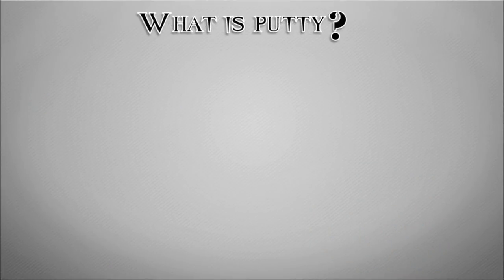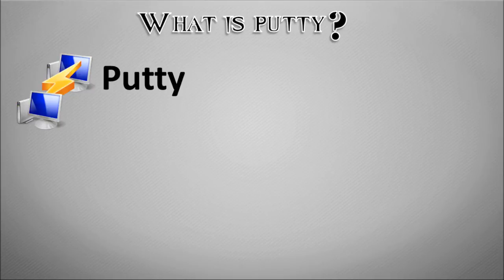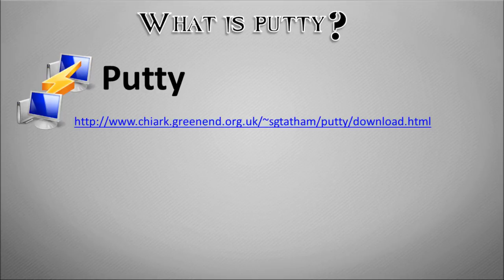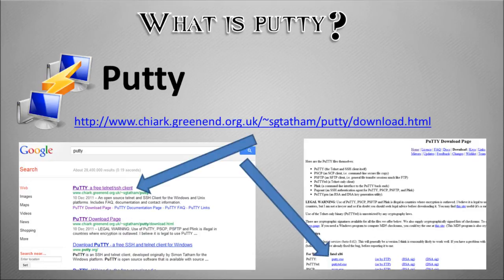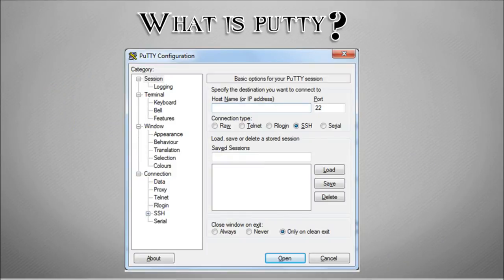What is PuTTY? PuTTY is essentially software that runs on Windows and it allows you to open up that SSH connection. It can be downloaded from the link in the description, or you can just Google for PuTTY and the first hit will be the PuTTY site. Go to the Downloads section and you'll see the link for PuTTY.exe. Download that and run it — it doesn't need to be installed, just double-click it and it will execute and you'll be presented with this menu.